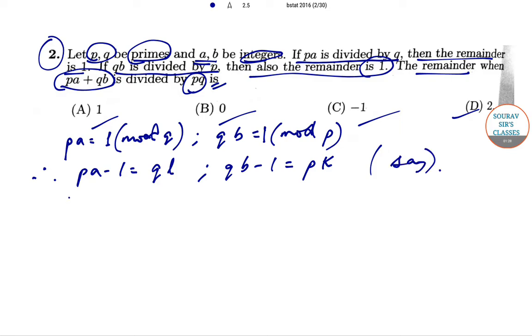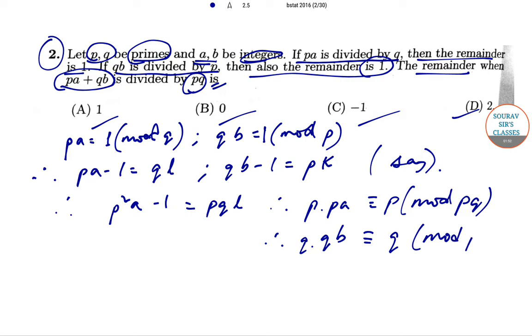So that implies that P square A minus 1 is equal to PQ L. Therefore we can write that PA into PA will be congruent to P mod PQ, and similarly we can write that Q into QB will be congruent to Q mod PQ. So these are the things that we have got so far.